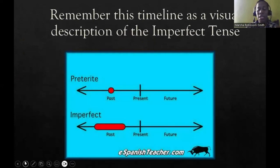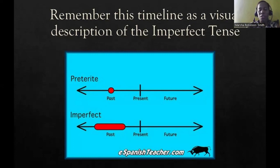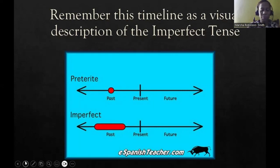Here is a timeline I want you to use as a visual description to remember when to use the imperfect tense. We have the pretérito tense shown as a small dot — both are past tenses — but the imperfect is longer, referring to ongoing, repeated actions. It describes habitual actions in the past, and when you cannot give a definite time period in the past, you also use the imperfect tense.